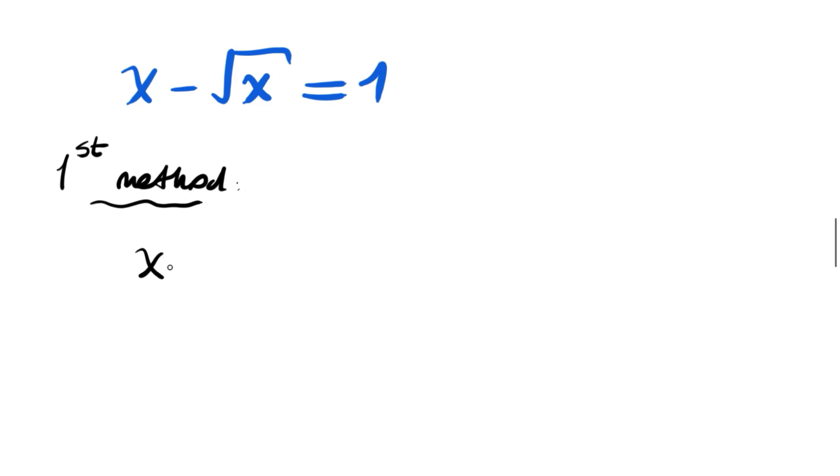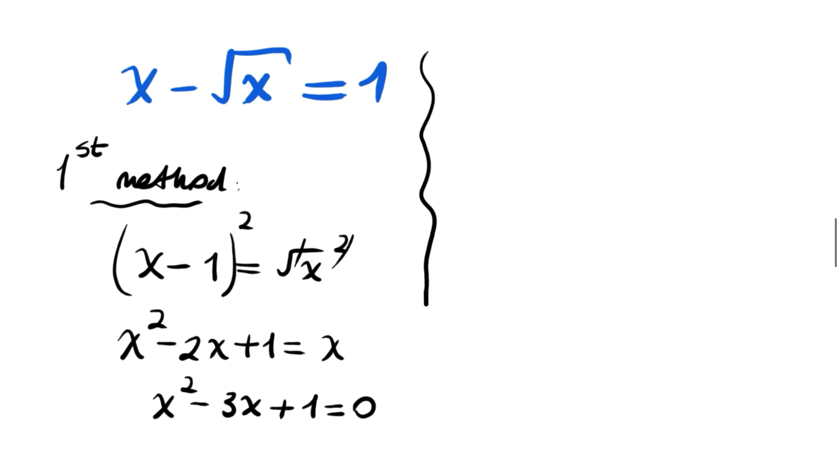For this, we will write x minus 1 equals root x, and squaring both sides, we get x squared minus 2x plus 1 equals x. The square root of x and square cancels. Now, writing this as x squared minus 3x plus 1 equals 0,